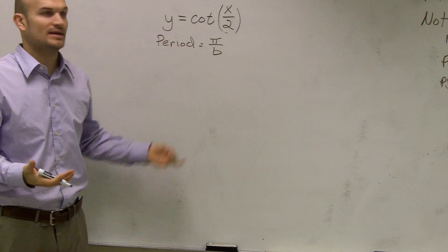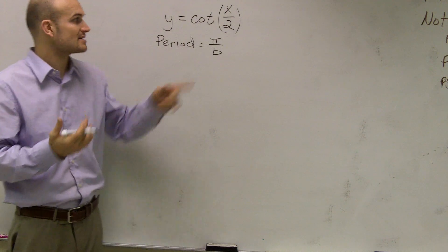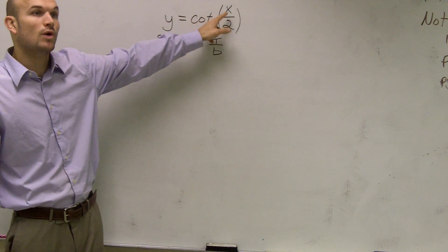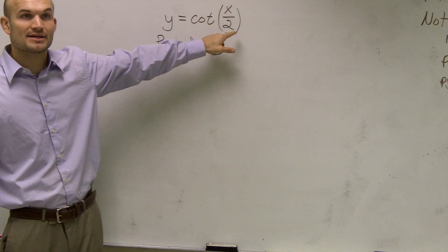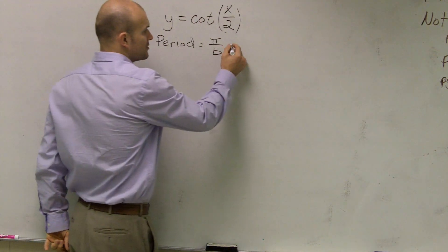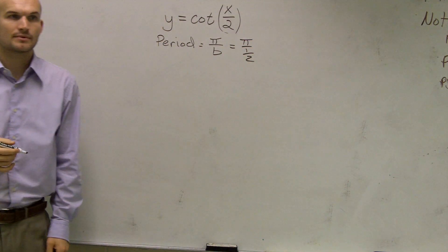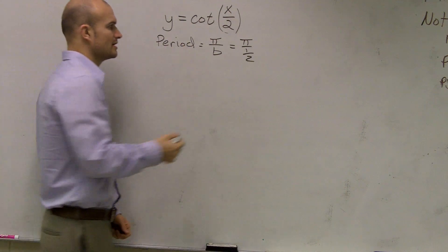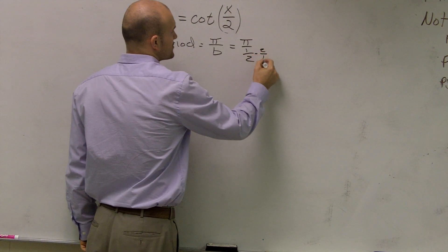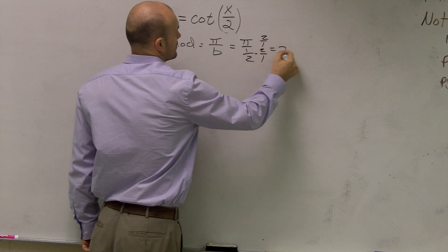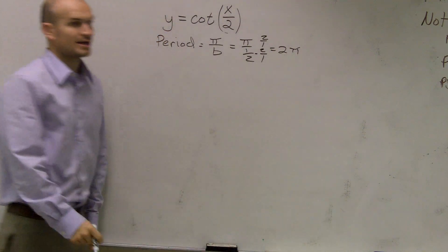In this problem, we need to determine what is our b. Remember, our b is our number in front of the x. Well, the number in front of this x is a 1, but that 1 is being divided by 2. So therefore, our b is going to be 1/2. Then I just go ahead and get this off the bottom. I multiply by my reciprocal.